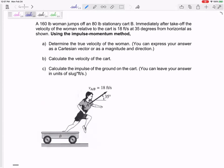This 160 pound woman is jumping off of a stationary cart, a wagon. She's jumping off of a wagon. Immediately after, the velocity of the woman relative to the cart is 18 feet per second at 35 degrees. That's what it feels like.